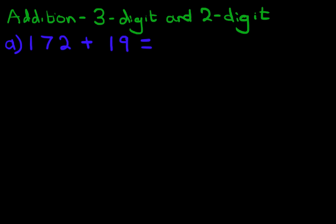Now we're going to do this using the vertical format. So the first stage is to rewrite the question in columns. So let's do that over here. 172 plus 19. And there we have it.